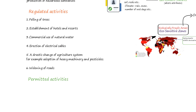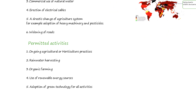Activities that are permitted include: ongoing agricultural or horticultural practices, rainwater harvesting, organic farming, use of renewable energy sources, and adoption of green technology for all activities.